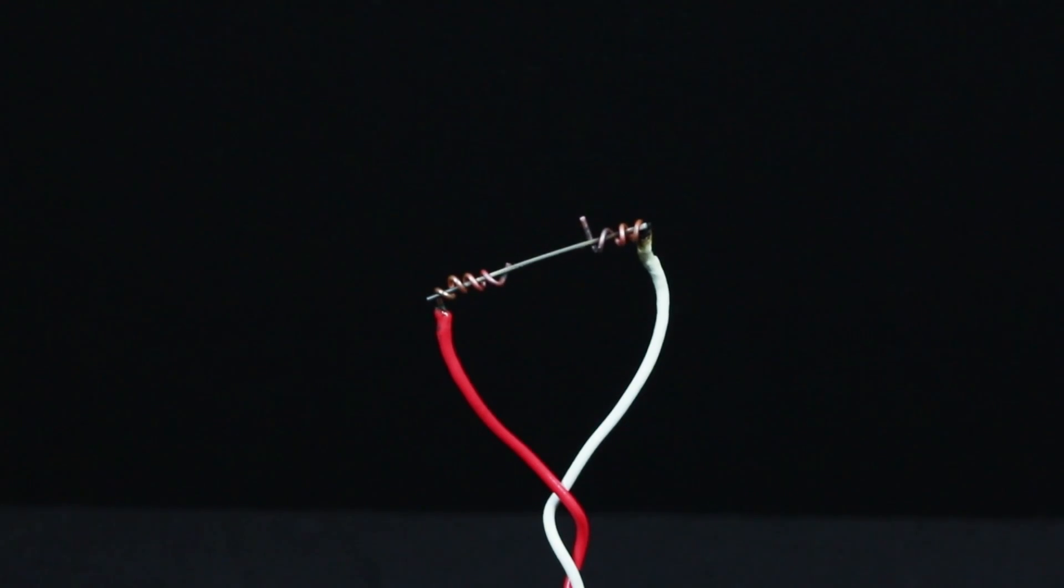Next, take a piece of graphite and load it in the coils of wire. Be sure that it fits tightly so that it can establish a good electrical connection.